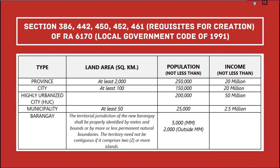For a province, the land area must be at least 2,000 square kilometers, population no less than 250,000, and annual income of 20 million. For a city, at least 100 square kilometers, population no less than 150,000, and annual income of 20 million — but prior to that, it must have earned 100 million for the last two consecutive years. For a highly urbanized city, land area is similarly at least 100 square kilometers based on the 1991 code.